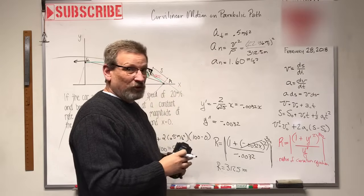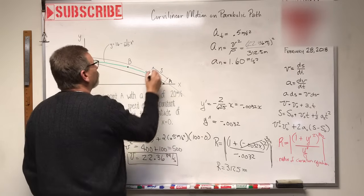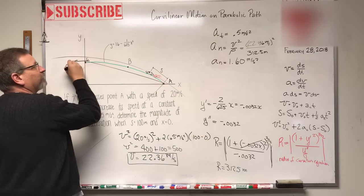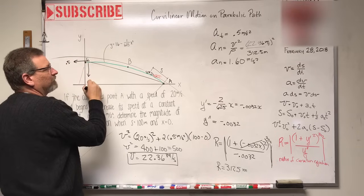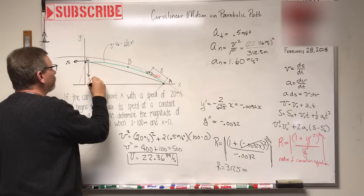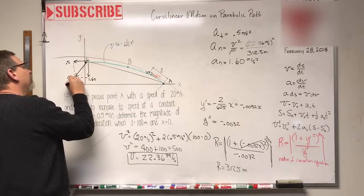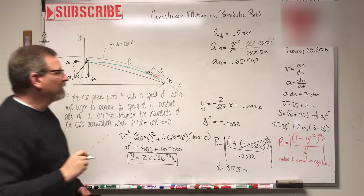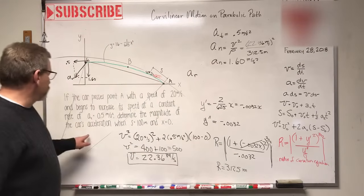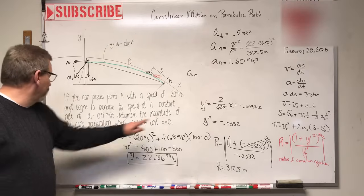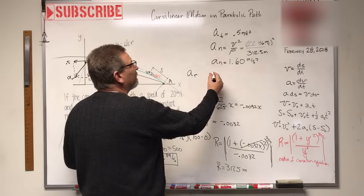So how do I find the resultant of those two? As the car's going around over here, this guy is 0.5, this guy is 1.60. So what I'm looking for is that guy - that's the resultant of those two. The resultant acceleration, which is right here what they want, the magnitude of the car's acceleration, that's what we're looking for.